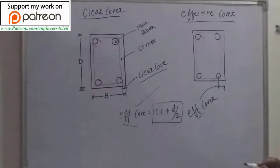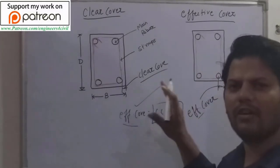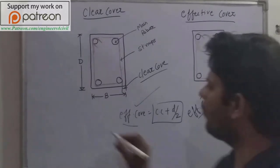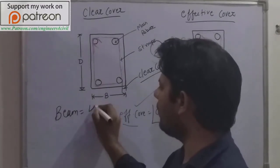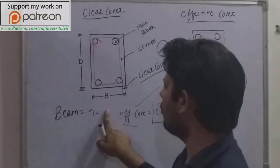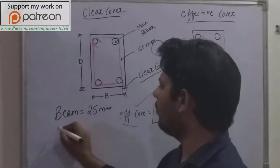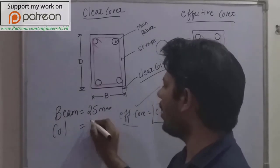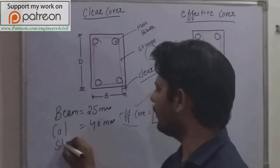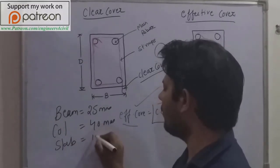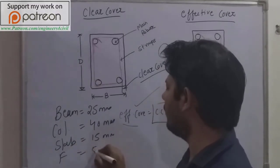And according to IS code 456, we provide clear cover minimum, at least clear cover for beam is 25 mm. For column we provide 40 mm, for slab we provide 15 mm, and for footing we provide 50 mm.